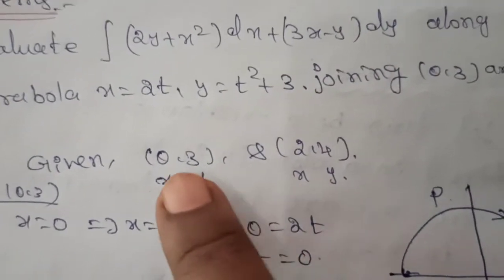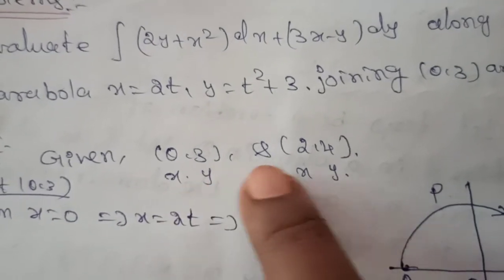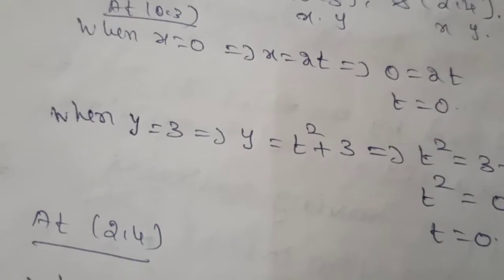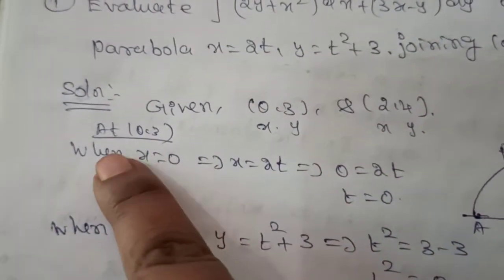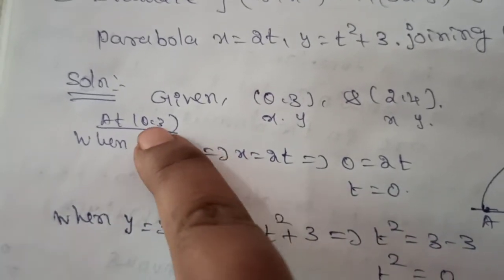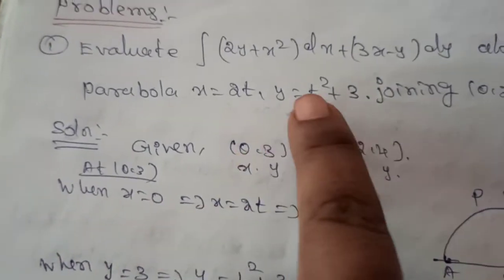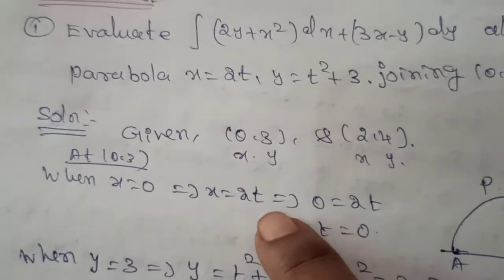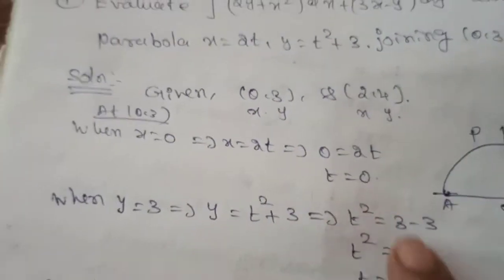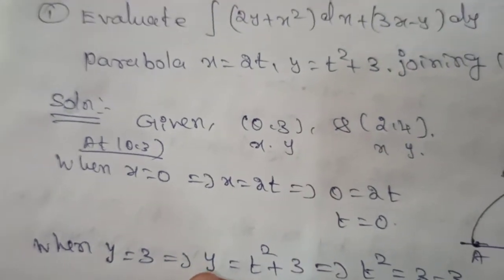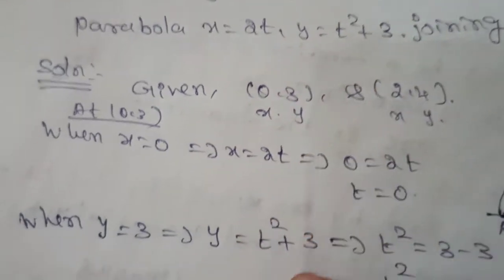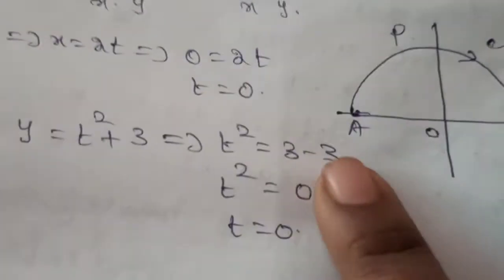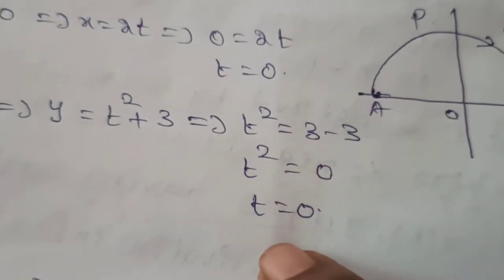Taking the given points (0, 3) and (2, 4). At the first point (0, 3): when x equals 0, substitute into x equal to 2t, giving 0 equals 2t, so t equals 0. For y equals 3, substitute into y equals t squared plus 3, giving 3 equals t squared plus 3, so t squared equals 0, therefore t equals 0. First point gives t equals 0.